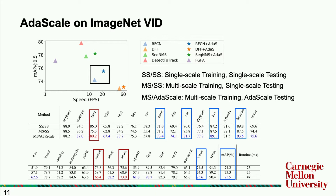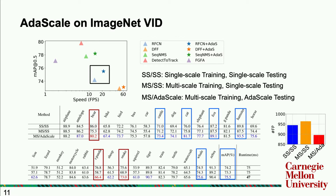In terms of runtime improvement, we go from 75 milliseconds down to 47 milliseconds for the baseline object detector running on a GPU 1080. We also investigate why AdaScale works by checking whether it is really reducing false positives. We pick the top 5,000 predictions of the object detector for each category and look at how many are false positives across different methods. The multi-scale training with AdaScale testing has the least number of false positives, confirming our intuition that this methodology reduces false positives, which improves mean average precision. And of course we also improve speed because we downsample.